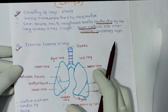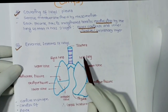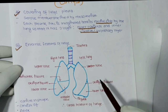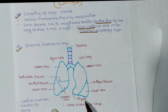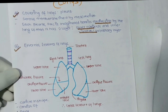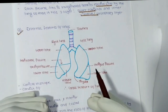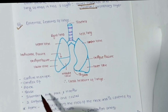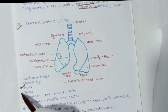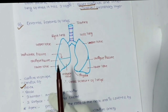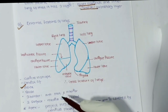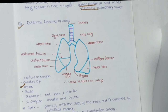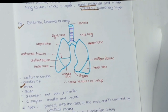In the diagram we can see the trachea, right lung, left lung, upper lobe, lower lobe, oblique fissure, horizontal fissure, medial lobe, and lingula. The lung is conical in shape. It consists of an apex, a base, three borders, and two surfaces.